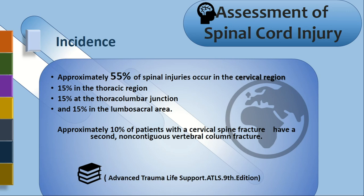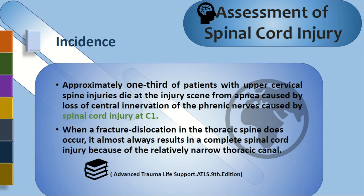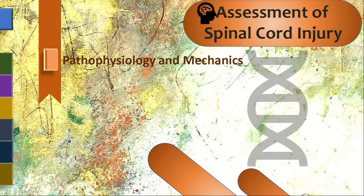Approximately 10% of patients with cervical spine fracture have a second non-contiguous vertebral column fracture. About 1000 patients with upper cervical spine injuries die at the injury site due to apnea caused by loss of innervation from the phrenic nerve — inhibitory input from C1, C2, C3. When fracture-dislocation occurs at the thoracic spine, it almost always results in complete cord injury because of the relatively narrow spinal canal in the thoracic region.